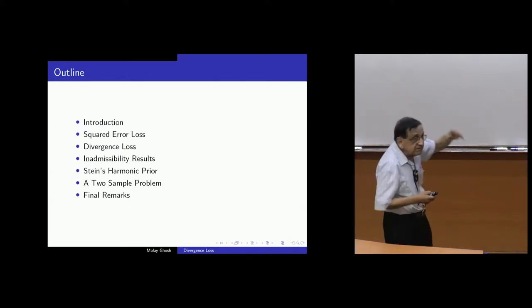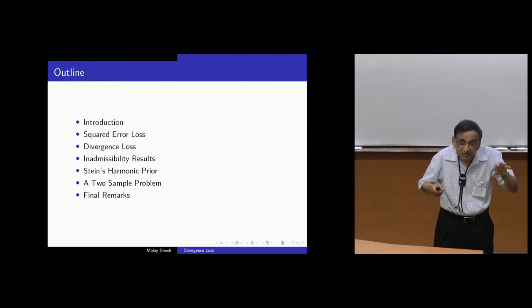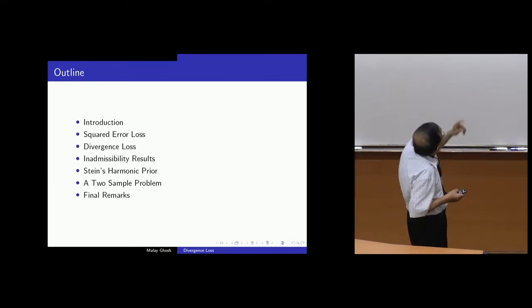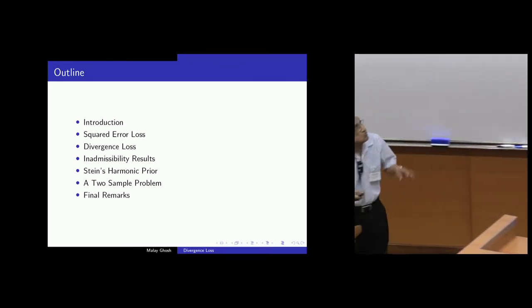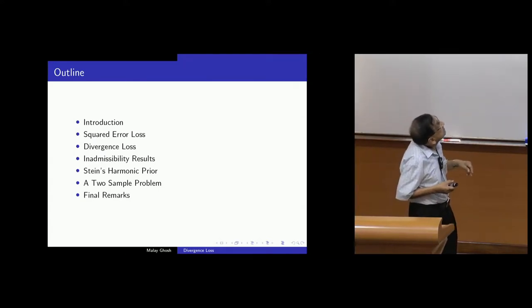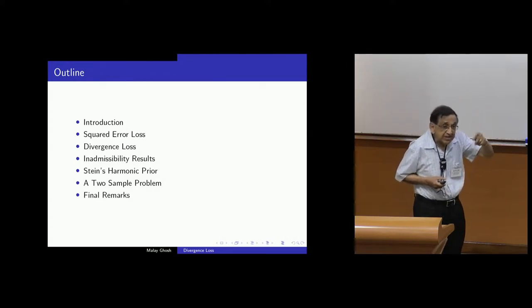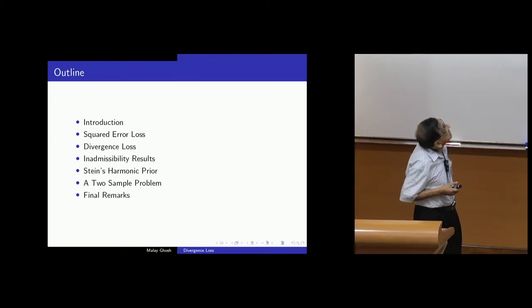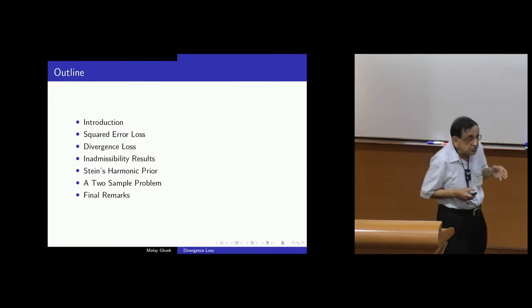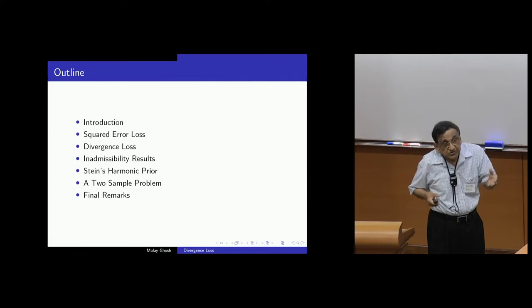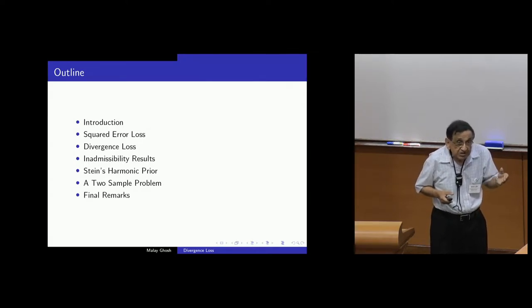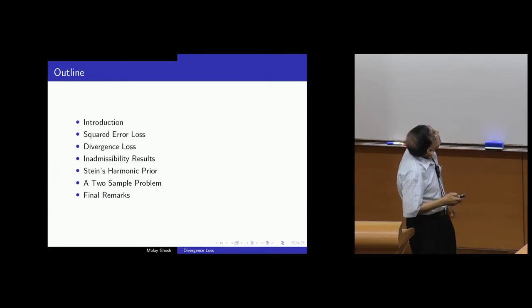So, I'll give an introduction, where I will basically give the results which I'm going to describe. Start with squared error loss, just to introduce, and then the divergence loss I will get. Proof of inadmissibility results. Stein's harmonic prior, which will be, again, later in the afternoon. A two-sample problem is the one with Professor Kubokoa. If time permits, then I'll make some final remarks. And one of the things I will try to point out is the duality between estimation and prediction. So, that's the plan.